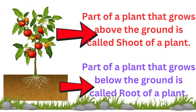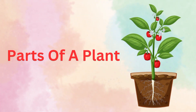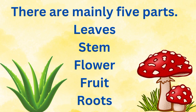The part of the plant that grows above the ground is called the shoot of a plant. The part of the plant that grows below the ground is called the root of the plant. Now, let's learn each part of the plant.